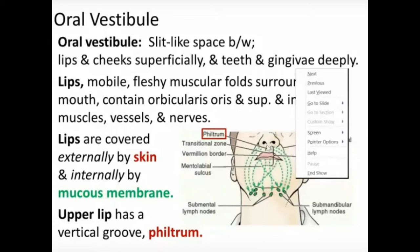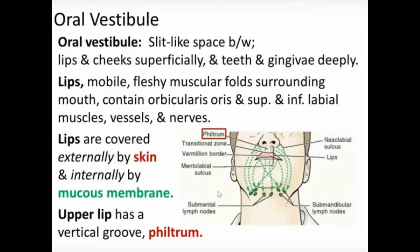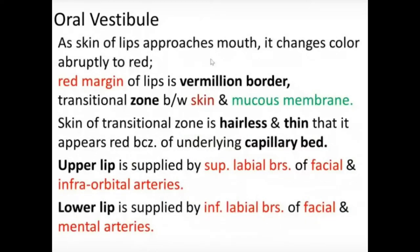The philtrum divides the upper lip into medial and two lateral — right and left — portions. As the skin of the lips approaches the mouth, it changes color and becomes the red margin of the lip, called the vermilion border. This is a transitional zone between the skin and the mucous membrane; the skin here is hairless, thin, and appears red due to the highly vascularized underlying capillary bed.